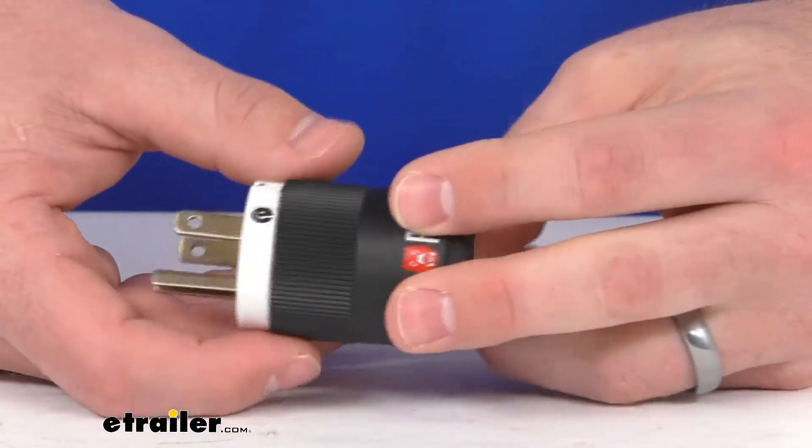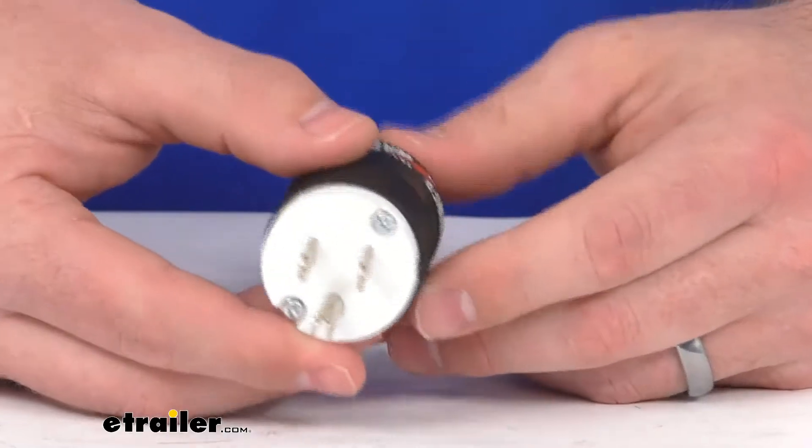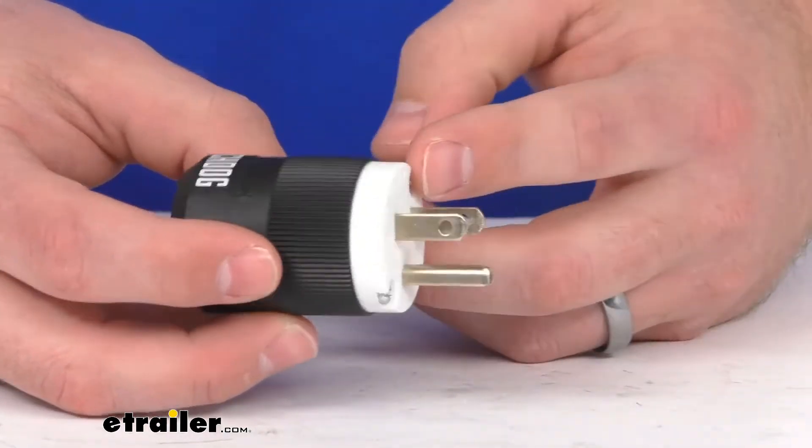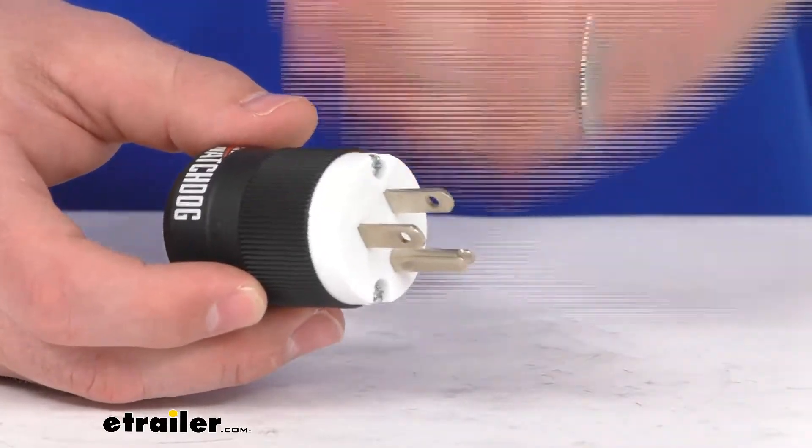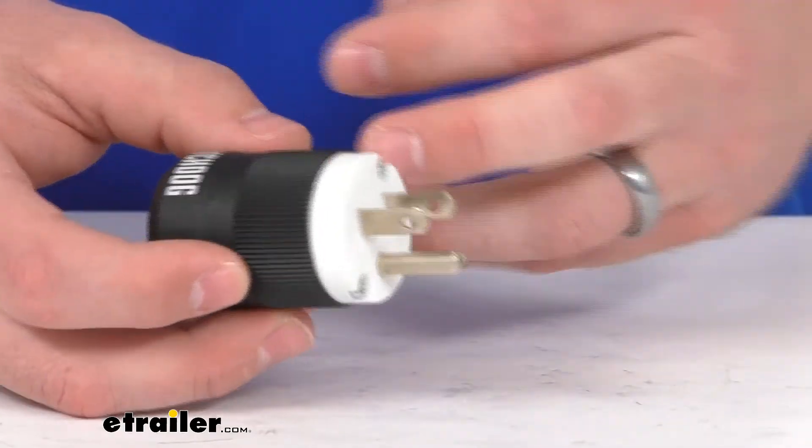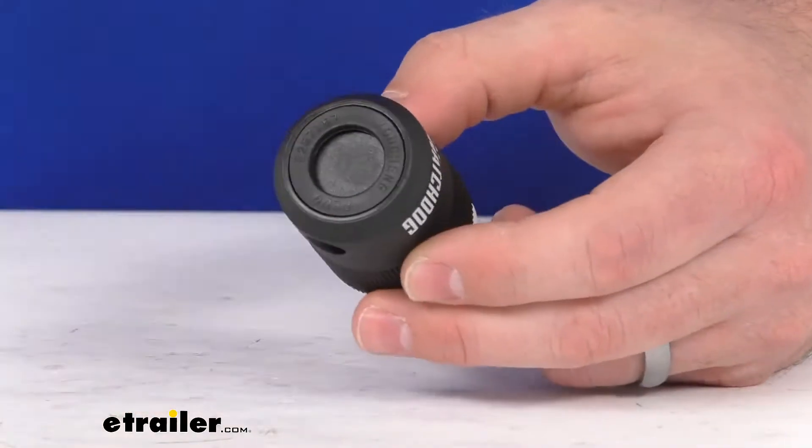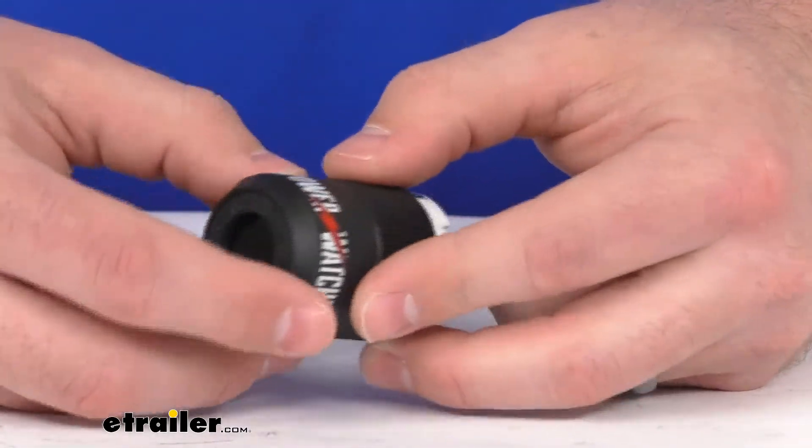This will plug right into a 15 amp AC socket on the generator and it is going to bond your neutral and your ground together to help prevent those error faults so that you can get power to your RV again.